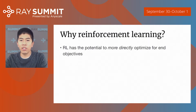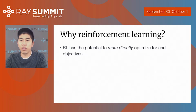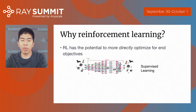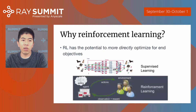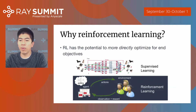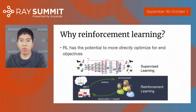So why RL? As background, the main difference between RL and supervised learning is that reinforcement learning has the potential to more directly optimize for end objectives. In supervised learning, you might make predictions about data — for example, given some images, you might predict the category of items. In RL, you're instead training an agent or a policy to take actions in some environment. Based on the actions the agent takes, the environment provides feedback in terms of observations and rewards, and over time the agent learns to improve its actions to maximize the reward it receives.